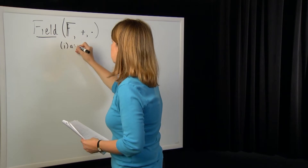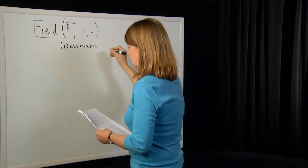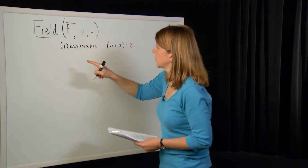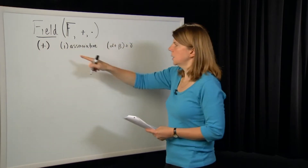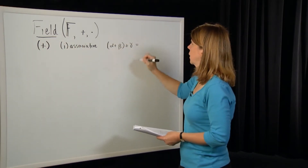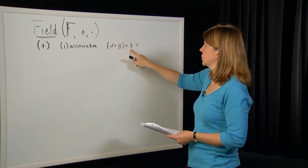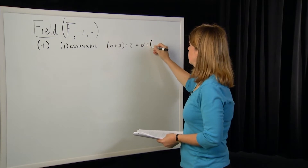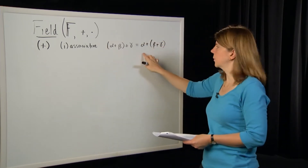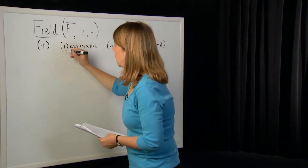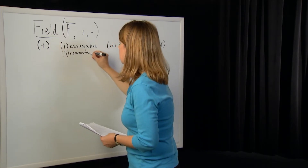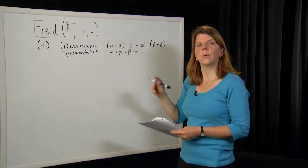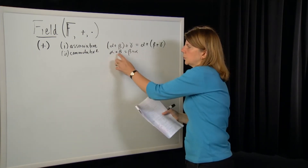The associative property: the field is associative, which means that if you take any elements alpha, beta, and gamma in the field and apply the addition operator, you can add alpha and beta together and then add gamma — or add alpha to the sum of beta and gamma — and you get the same result. So you can do this operation first and then add alpha.